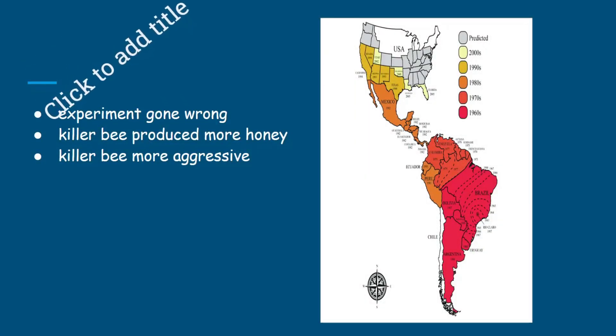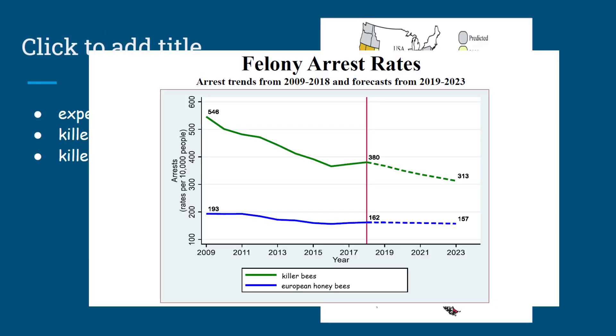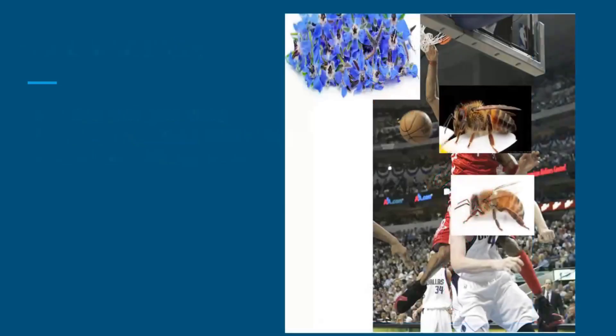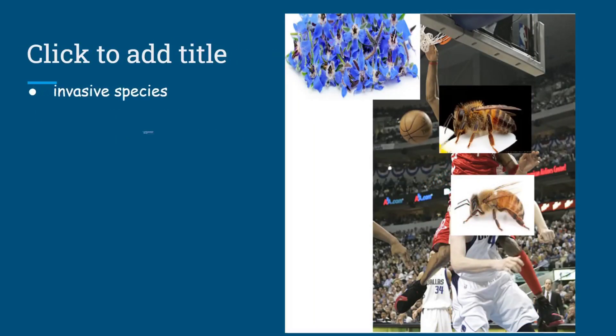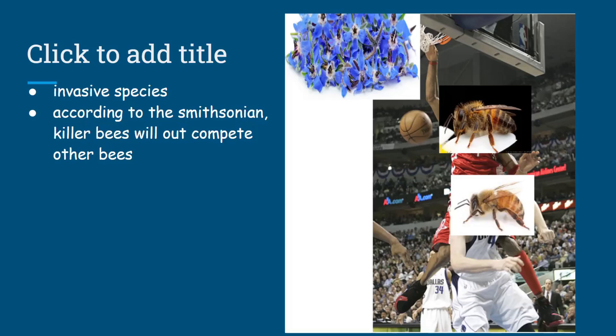They were the result of an experiment in Brazil to develop a bee that could produce more honey. While they were successful, they also produced a more aggressive bee. The bees escaped and began invading native bee habitats. Killer bees will out-compete native bees for their favorite food. So with that in mind, in order to truly save the native bees, we have to get rid of these invasive killer bees.